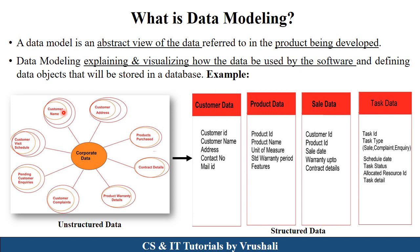This is unstructured data — corporate data where customer address, customer name, product purchase, and contract details show the information. Data modeling converts this unstructured data into structured format by using different techniques and tools. Here you can see customer data with attributes like ID, name, address, and product data with their attributes — showing structured information. That's why it is very easy to understand and easy to fetch the information. This is called data modeling — it visualizes the data by using different techniques and tools.